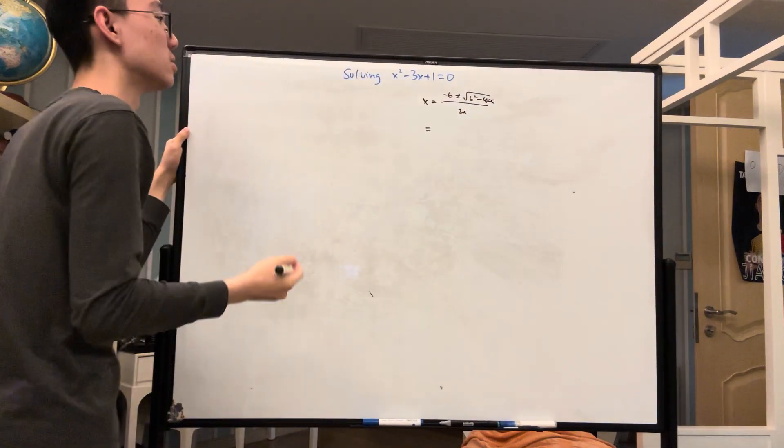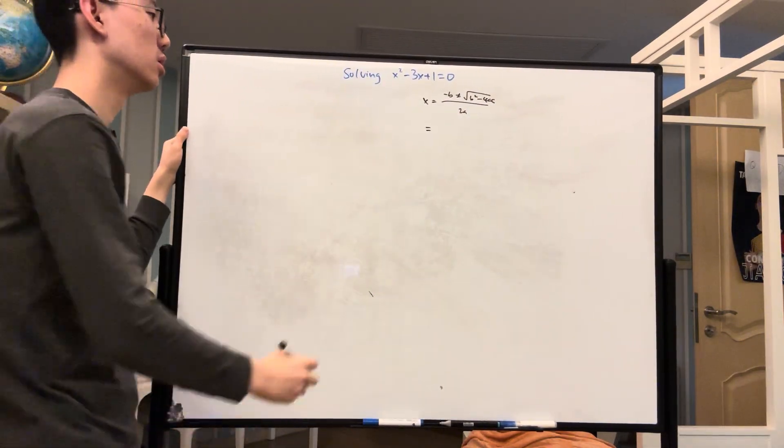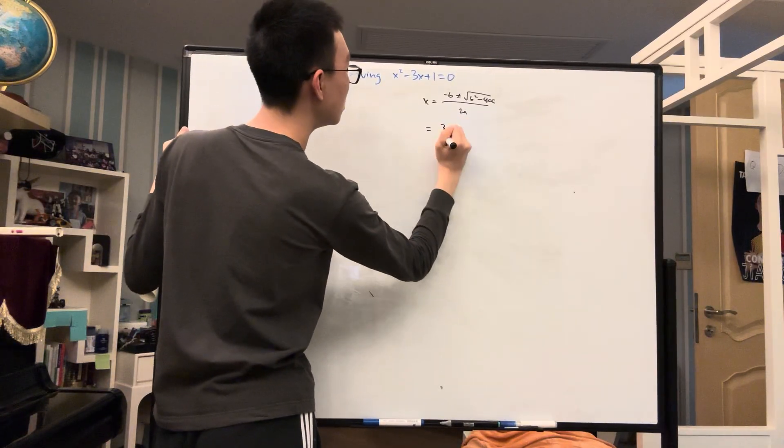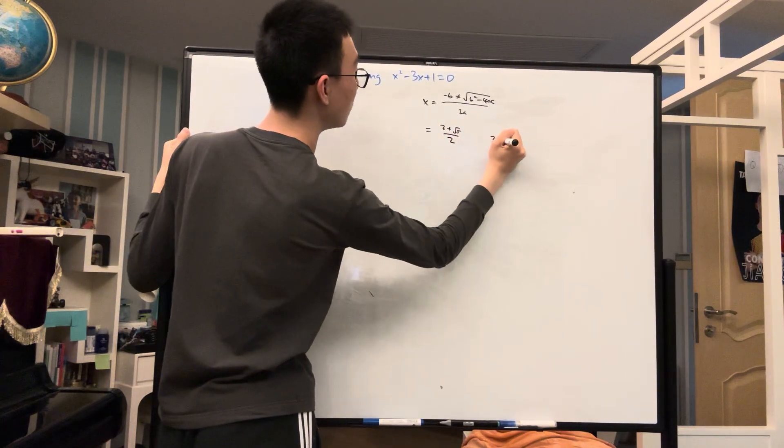And then this yields us two answers to solve this equation: 3 plus root 5 over 2 and 3 minus root 5 over 2.